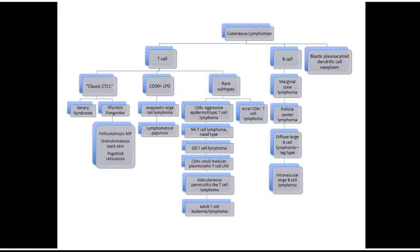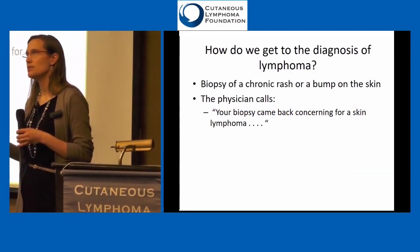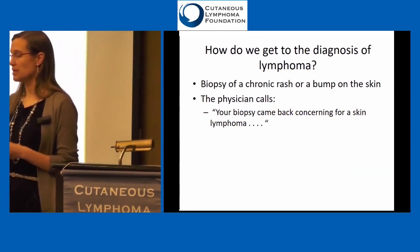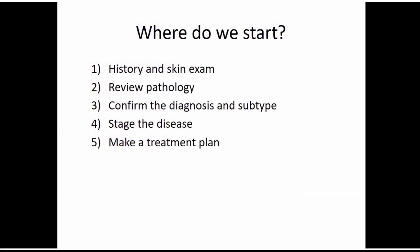That's the big picture of how all the lymphomas are classified. So how do we actually get to that diagnosis? Usually from the patient side, this starts because they went to see their primary care or dermatologist for a rash or bump that's not going away. They take a little biopsy, and then you get a phone call saying it could be a type of lymphoma. Usually patients will have heard they have a non-Hodgkin's lymphoma, and by the time they get to us, that's where the information stops. When we first see someone, we go through full history and skin exam, review the pathology report, confirm T-cell or B-cell and subtype, and then stage and treat.